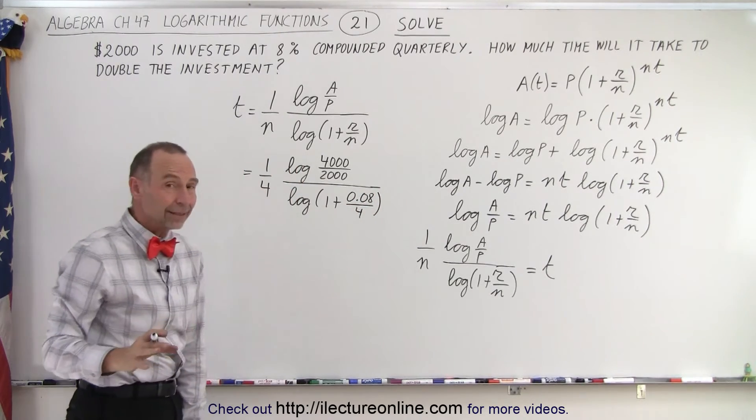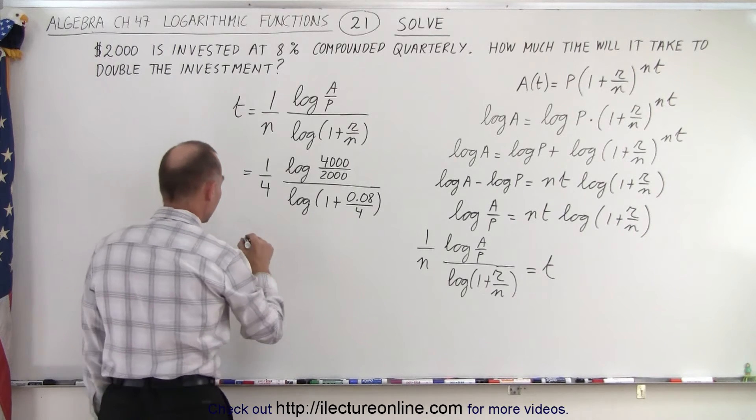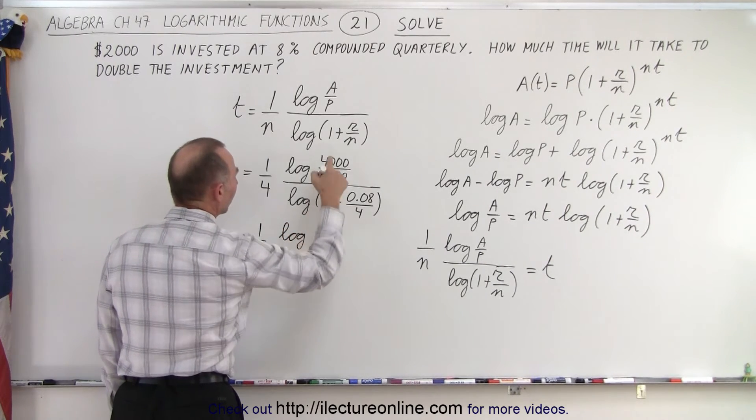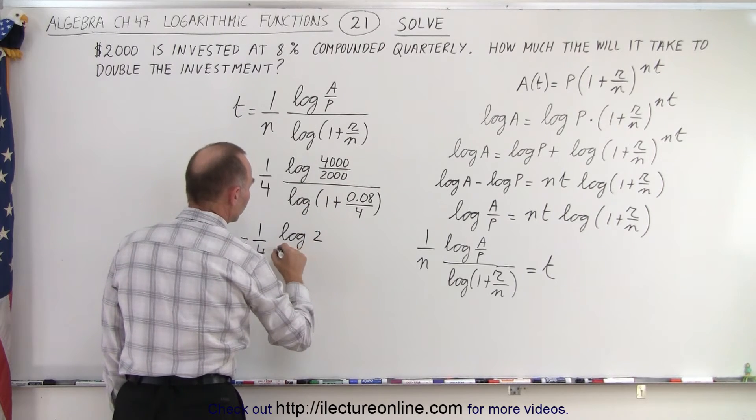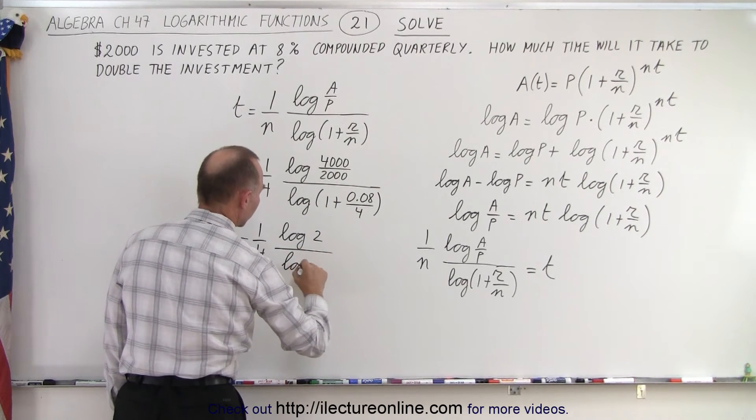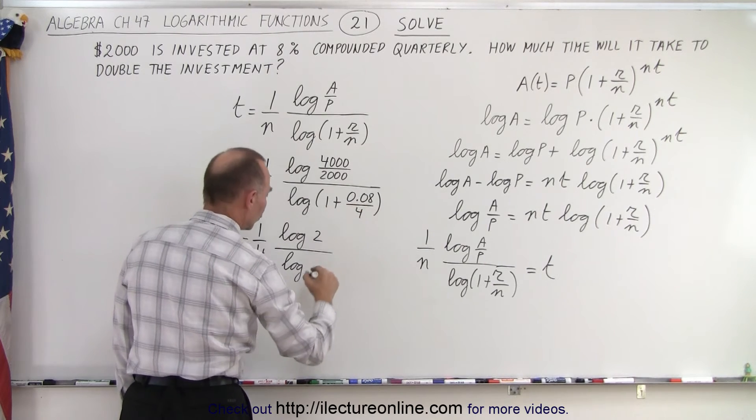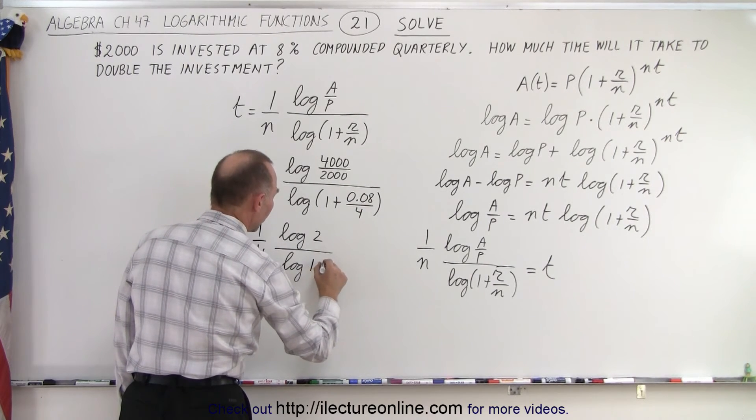Now before we calculate it, we can simplify things a little bit. So this is equal to one quarter times the log of 4,000 divided by 2,000, which is 2, divided by the log of 1 plus 0.08 divided by 4, which is 0.02, which means the log of 1.02.